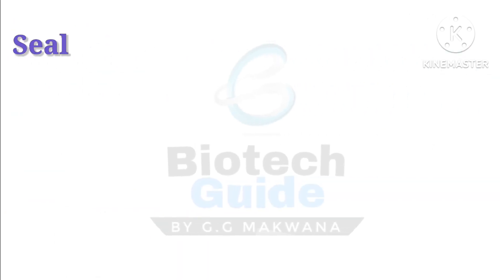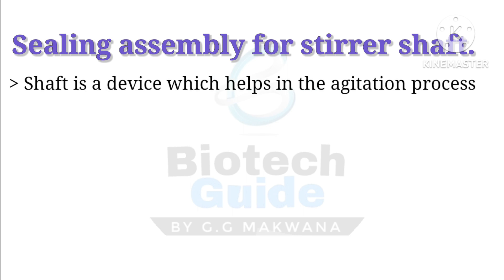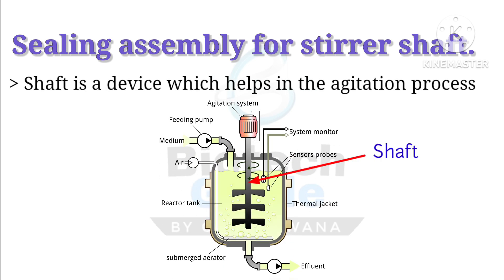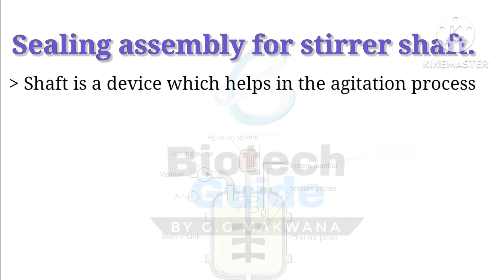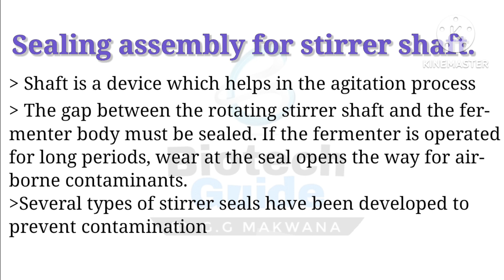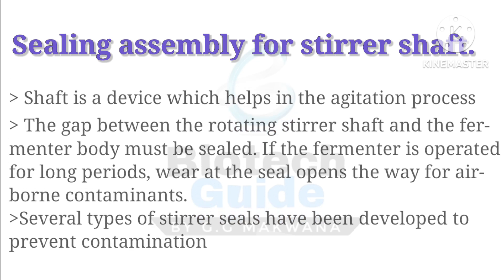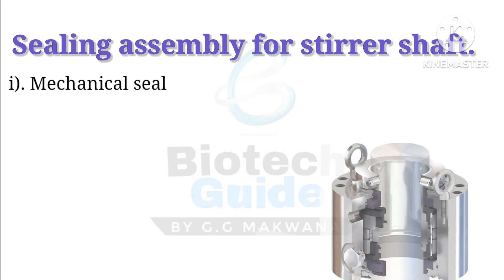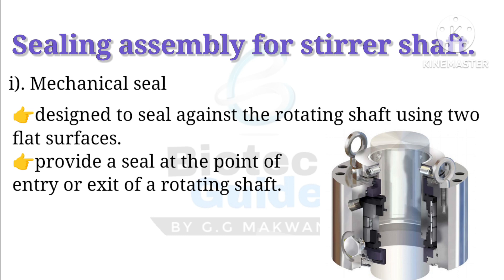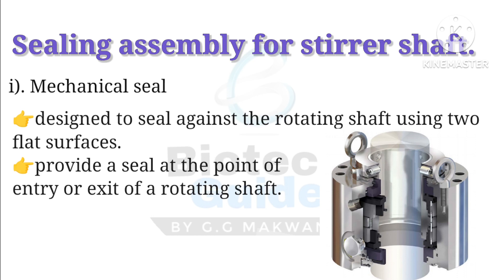Another important point in sealing is the sealing assembly for a sterile shaft. The shaft is a device which helps in the agitation process and is located in the middle of the reactor. The gap between the rotating sterile shaft and the fermenter body must be sealed, because if not sealed, it opens the way for airborne contaminants. For that, several types of sterile seals have been developed. The first one is the mechanical seal, which is designed against a rotating shaft using two flat surfaces. This kind of assembly provides a seal at the point of entry or exit of the rotating shaft.